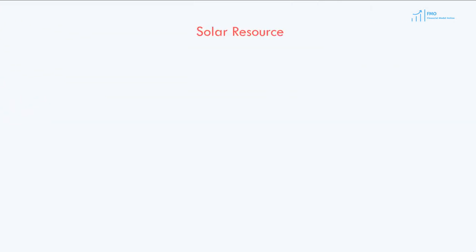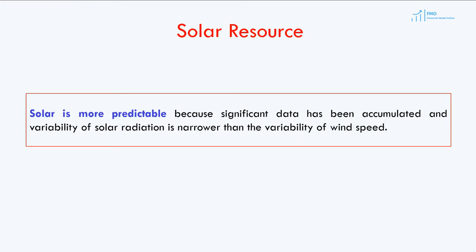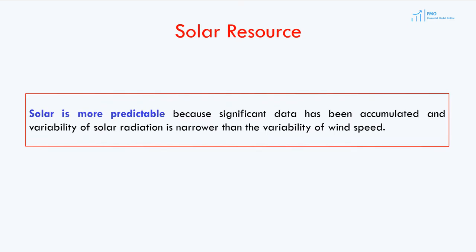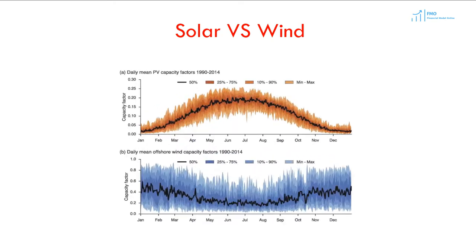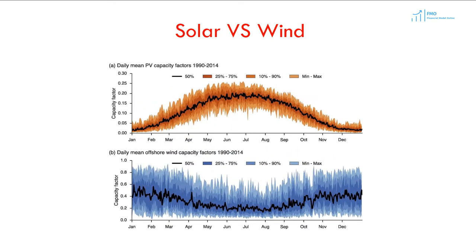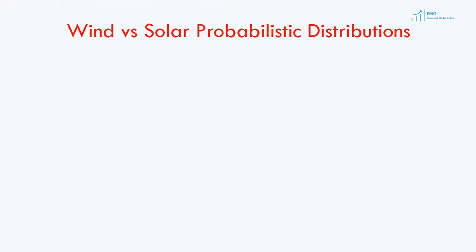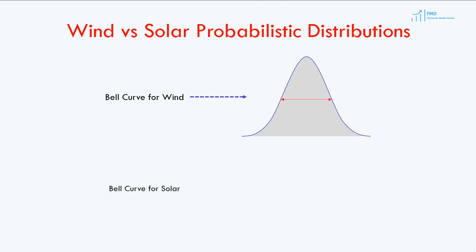Solar projects follow a similar process to establish the energy generation profile, except that there is significant data already available, and therefore it is more predictable. The variability of solar radiation is also significantly narrower than the variability of wind speed. The first graph shows the average capacity factor and its variability for solar projects. Comparing this to the wind project capacity factor variability, you can see how much wider the wind project's variability is compared to solar. This results in solar energy generation being more predictable, with a narrower bell curve, while the bell curve for wind is wider, reflecting higher uncertainties in wind energy generation forecasts.